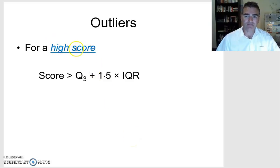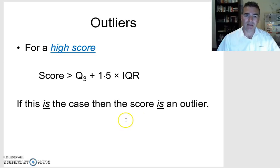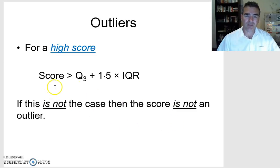If it's a high score — so we think it's well above all the other scores in the data set — then the score has to be bigger than the upper quartile plus 1.5 times the interquartile range. If it is, then it is an outlier. And if it's not bigger than it, then it's not an outlier. Remember, it has to be strictly bigger than that result — not the same as, and not smaller than it.